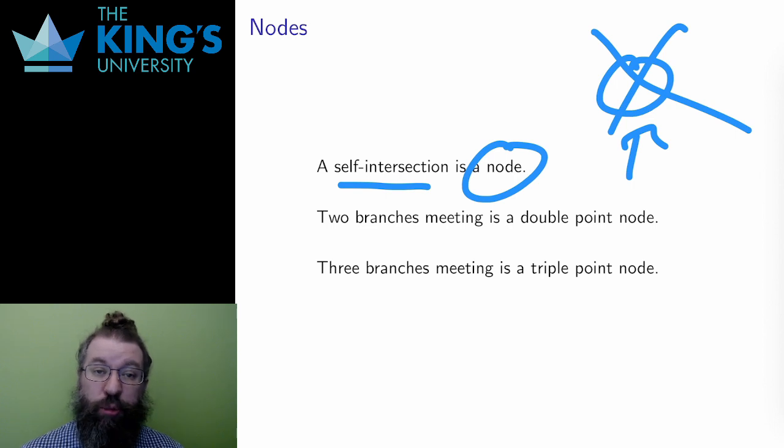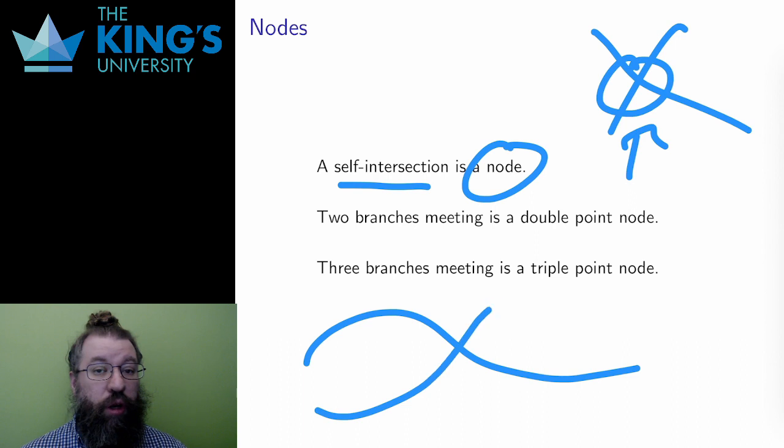And it's possible for more than two pieces of the curve to intersect at a point. If there are three, it's a triple-point node, and then I could define quadruple-point, quintuple-point, and so on.